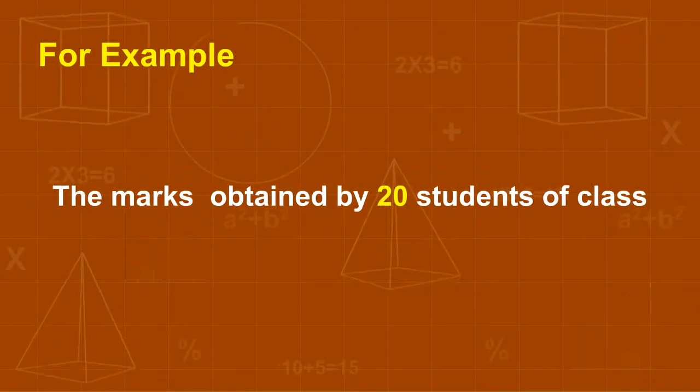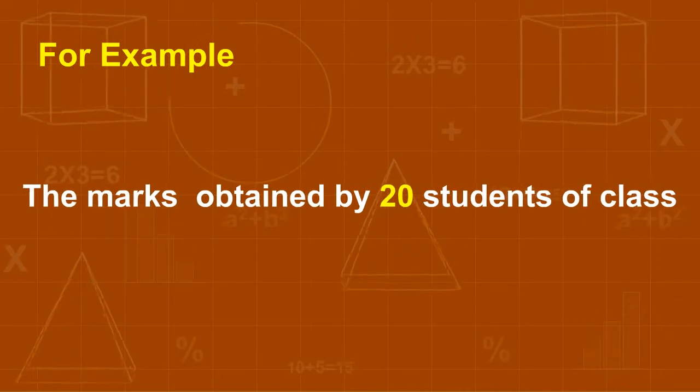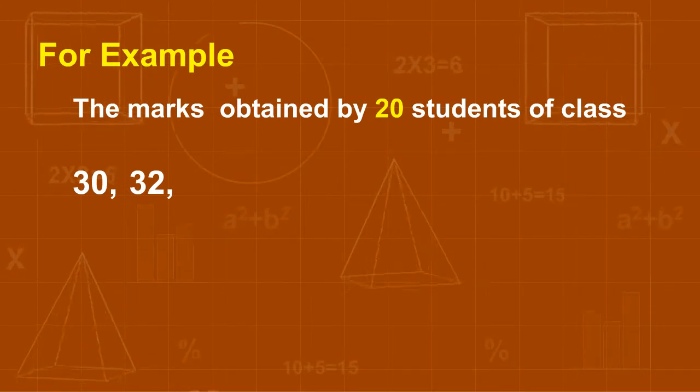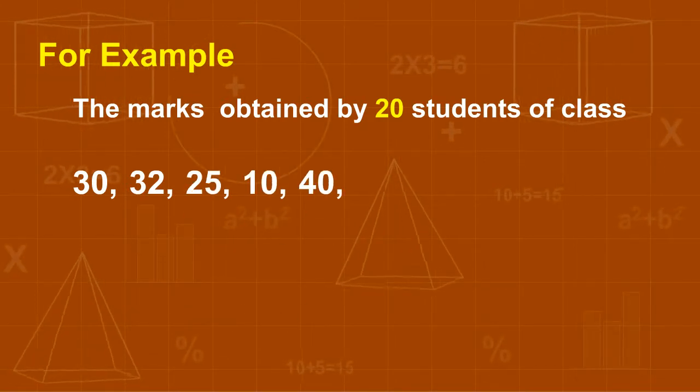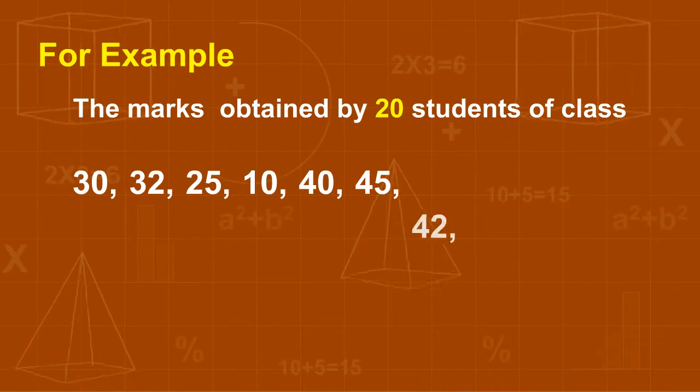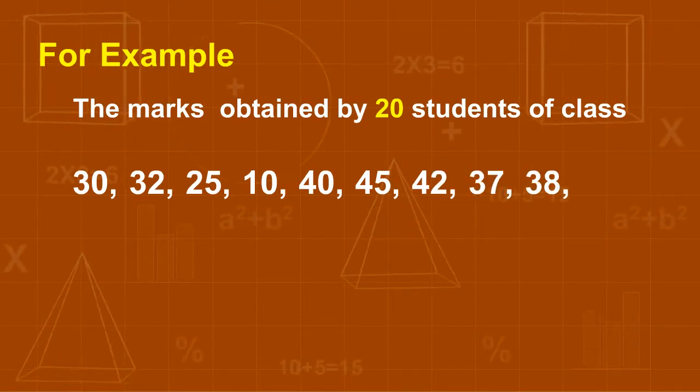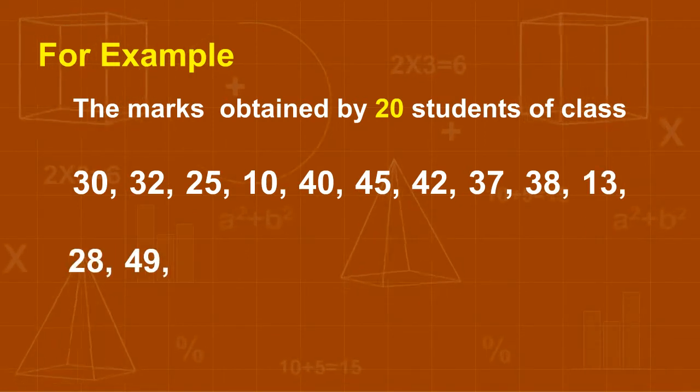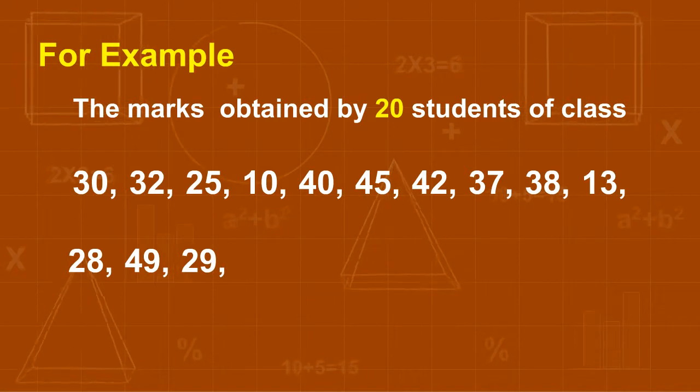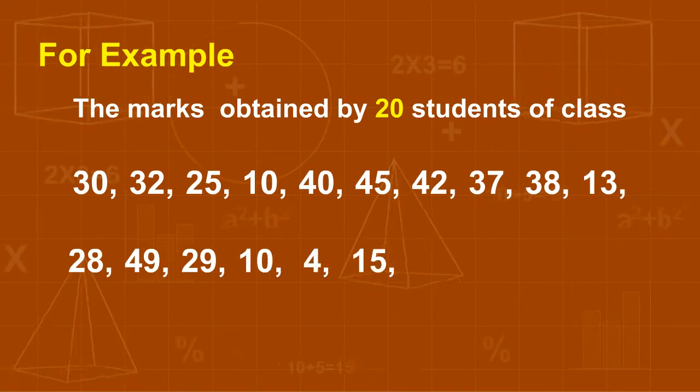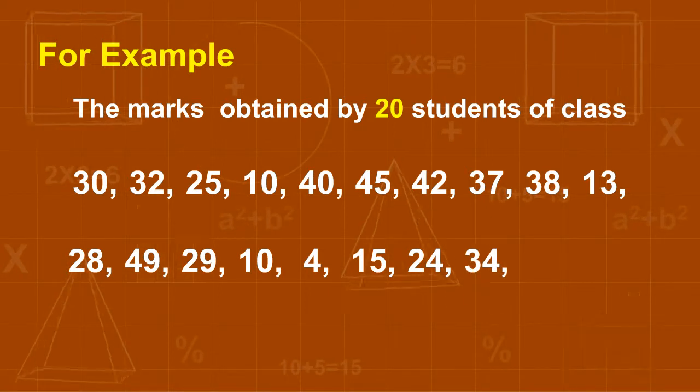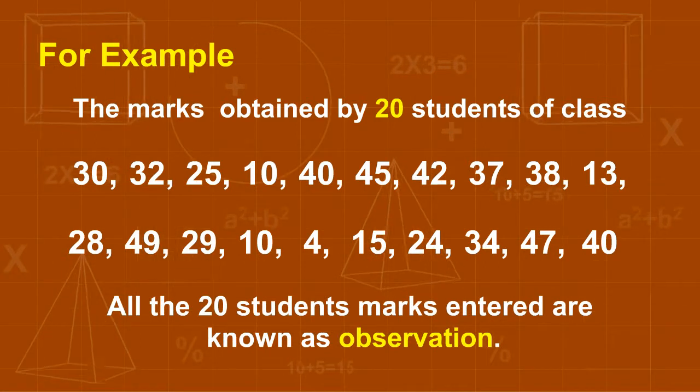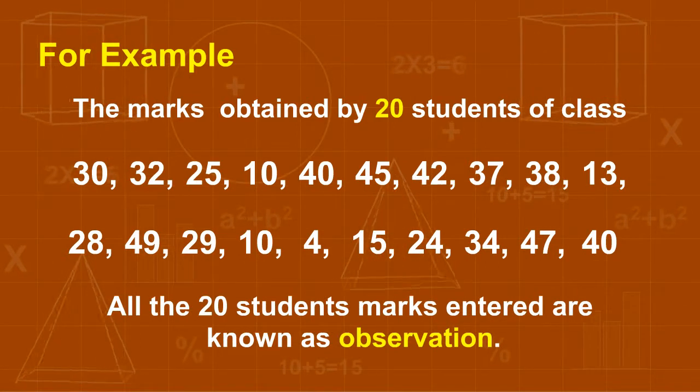For example, the marks obtained by 20 students of class 8th A in a mathematics test are 30, 32, 25, 10, 40, 45, 42, 37, 38, 13, 28, 49, 29, 10, 4, 15, 24, 34, 47, 40. All the 20 students' marks entered are known as observation.